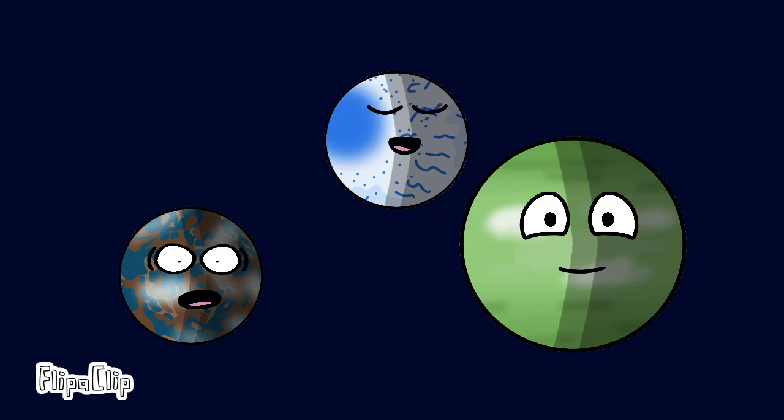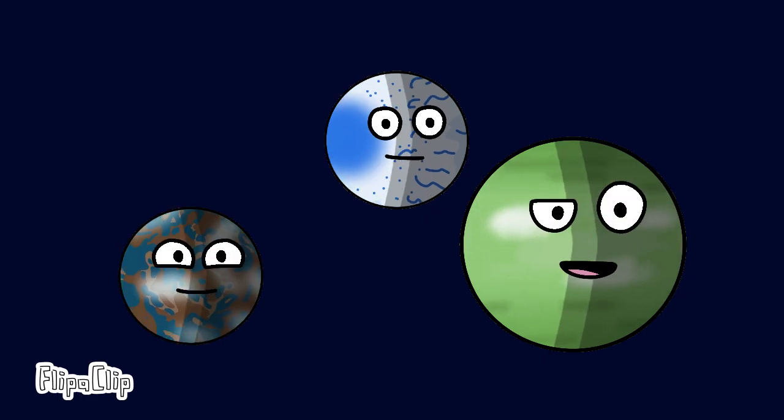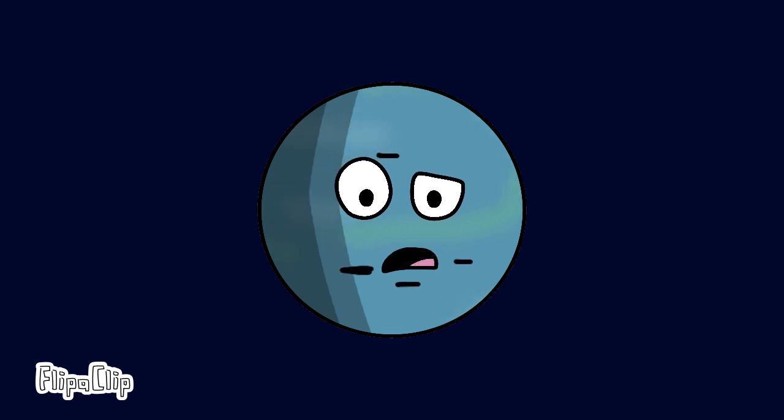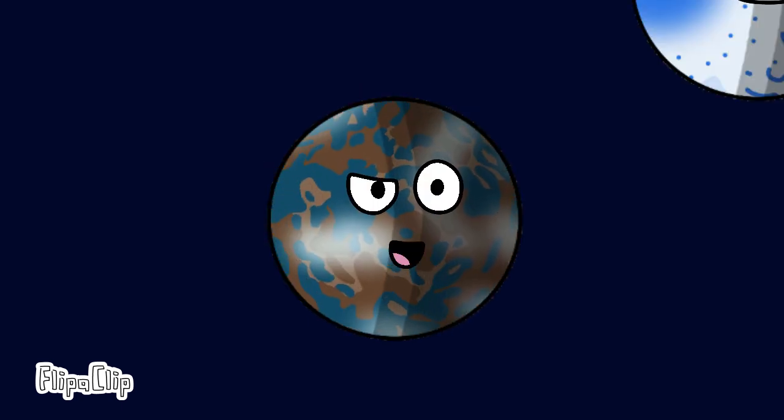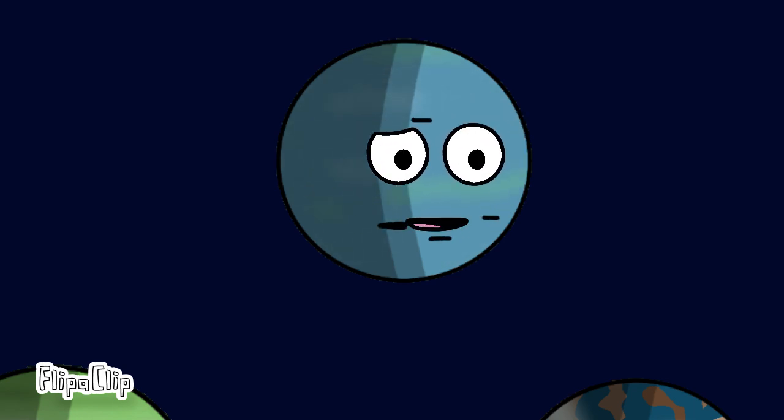Oh, nice to meet you. I'm Trappist-1F. I'm Trappist-1E. And I'm Trappist-1G. You don't have real names? Anyway, where did you come from? Well, funny you ask. I came from the solar system with Earth.